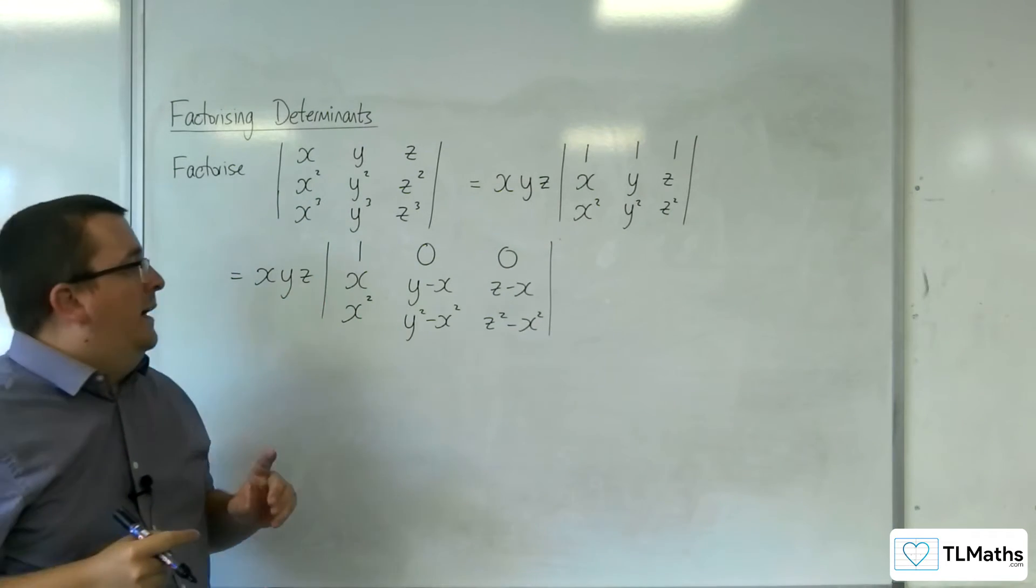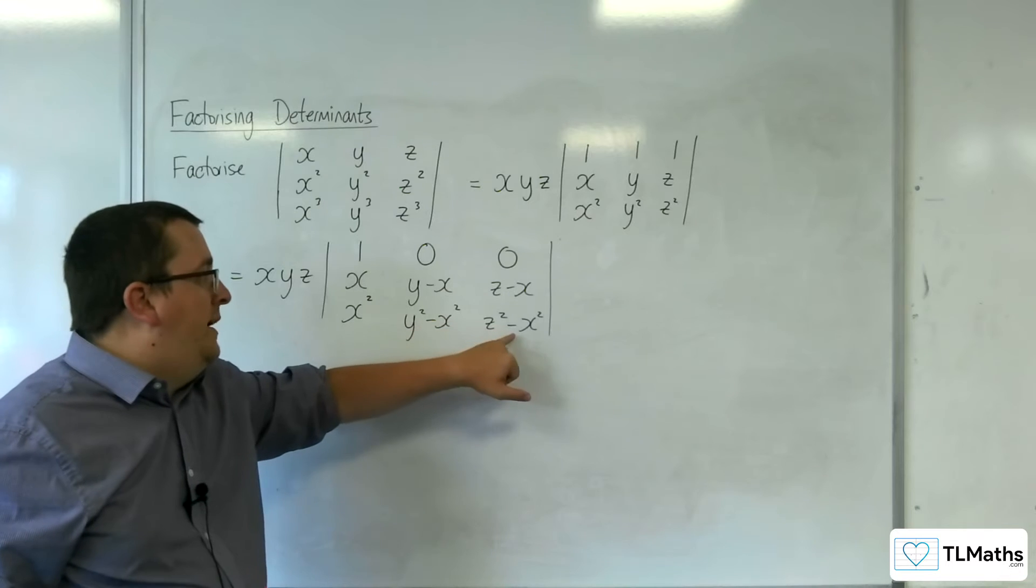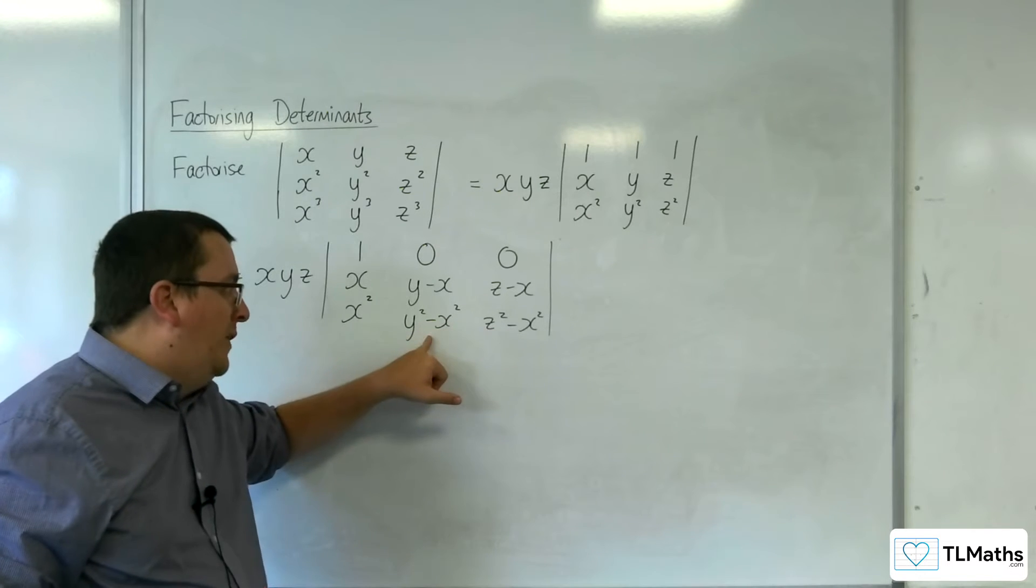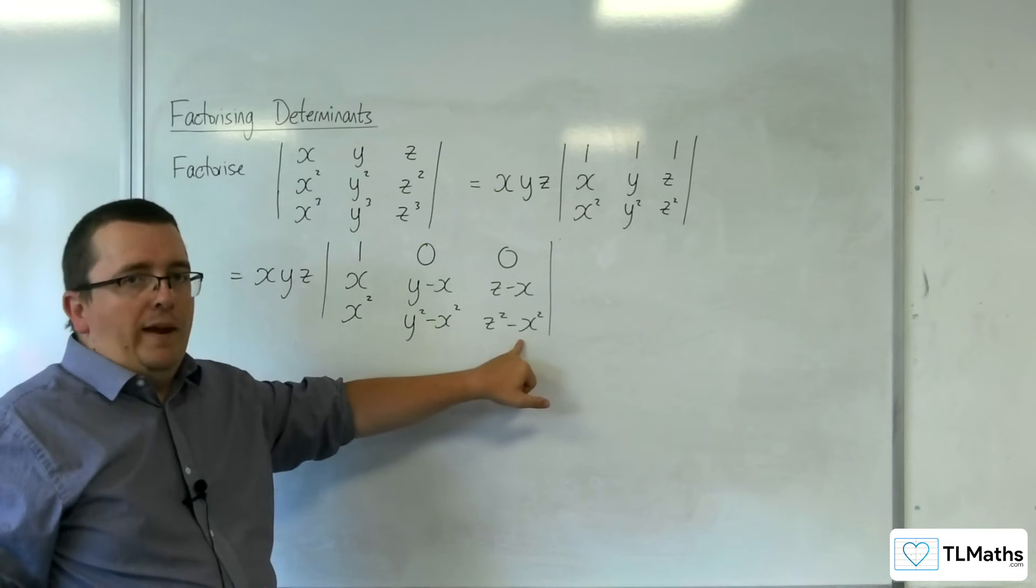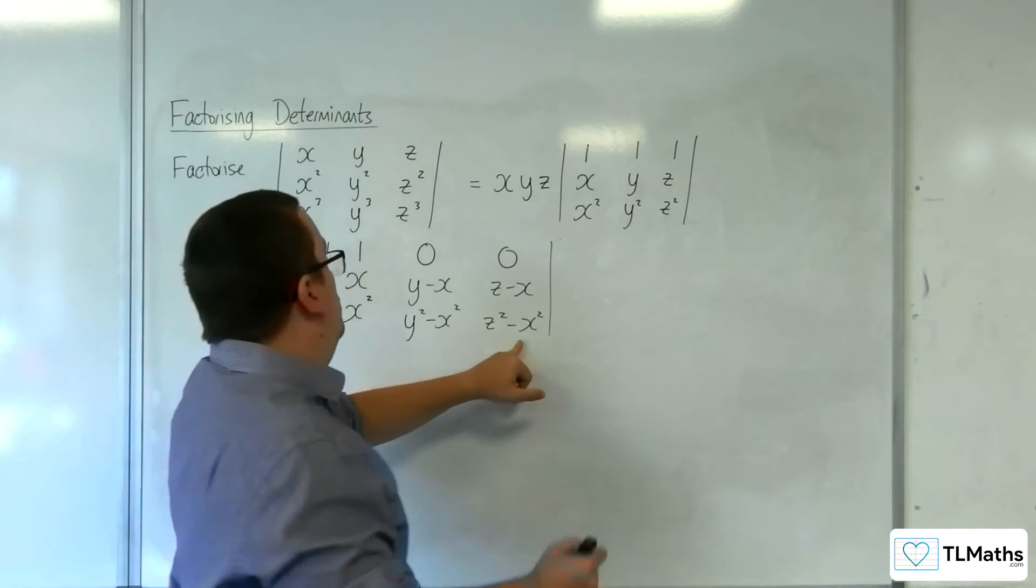Now what's good about that is that here, y squared take away x squared and z squared take away x squared, they are both the difference of two squares, so they can be factorized.